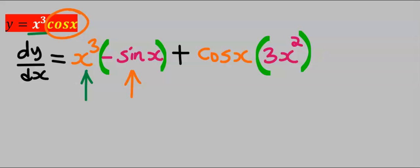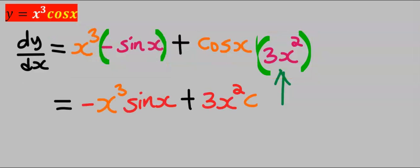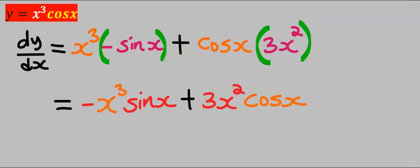Next we're going to put a plus and we're going to keep cos x constant. Then we're going to differentiate x to the power of 3 and our answer is 3x squared. Next we're going to open up the bracket.